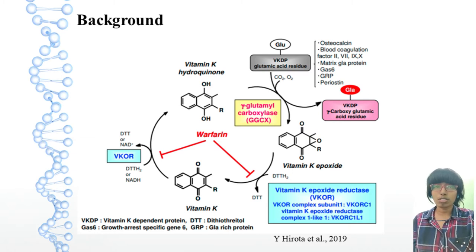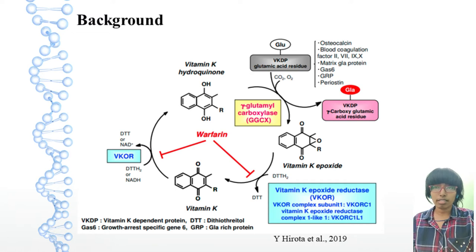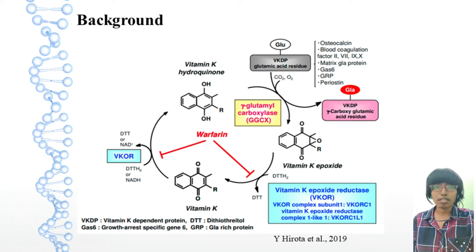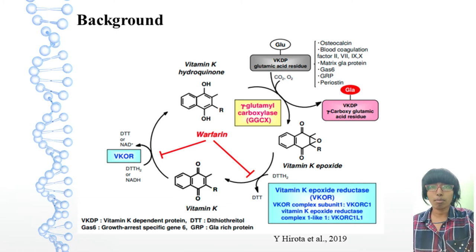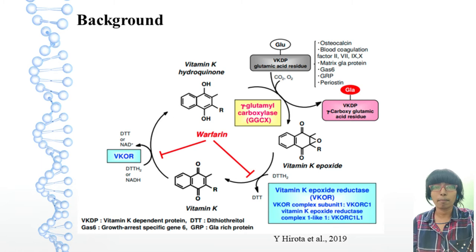Once transferred to the cells of the target tissue, vitamin K is metabolized by redox cycling in the intracellular endoplasmic reticulum body in a process known as the vitamin K cycle. Warfarin is an oral anticoagulant drug that inhibits vicar, stops the vitamin K cycle, and prevents the gamma glutamyl carboxylated combustion of the blood coagulation factors, thus inhibiting coagulation.